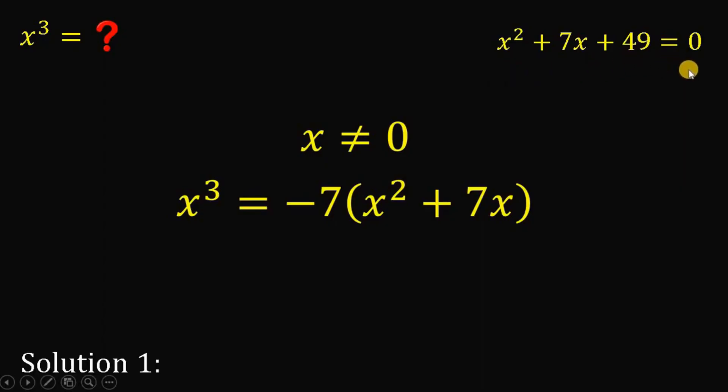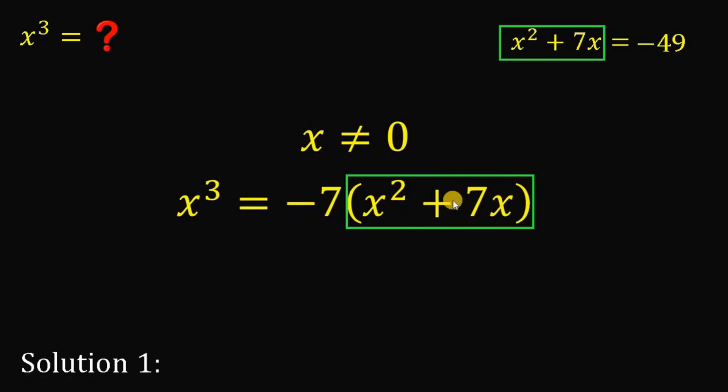Now, on the given equation a while ago, x squared plus 7x plus 49 equals 0. If we subtract 49 on both sides, this will give us x squared plus 7x equals negative 49. Now, look at this. We have the same expression x squared plus 7x. And we know it is equivalent to negative 49. Therefore, we can replace this expression by negative 49.